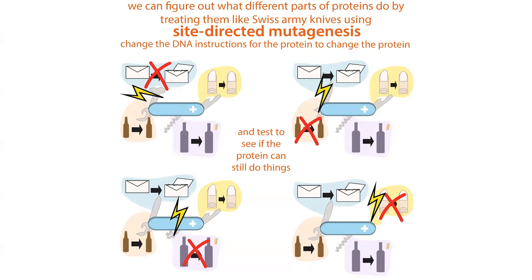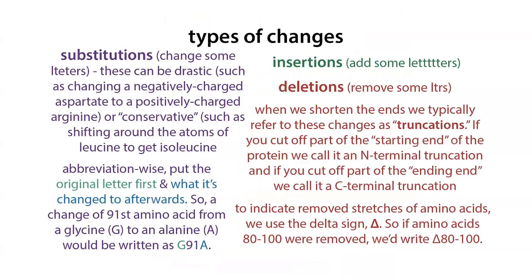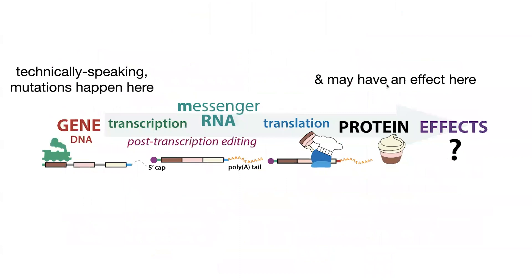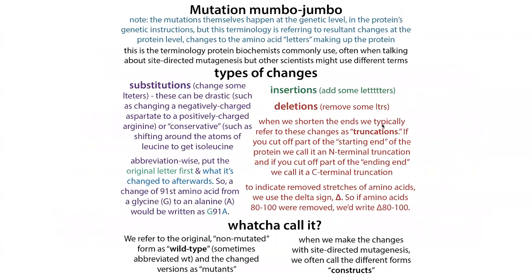So those are the basics of mutation terminology. Remember that technically mutations happen at the level of the gene and may or may not affect the protein, but we typically refer to these changed proteins as mutants as well. For substitutions, we put the original letter first, then the position of the amino acid, then the letter of what it's changed to. For deletions, we use the delta sign. Non-mutated forms are called wild type or WT. Mutant forms made in the lab are called constructs. Those are the key words we use to describe mutations in the context of biochemistry.